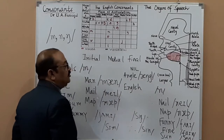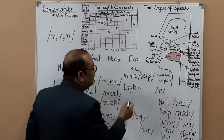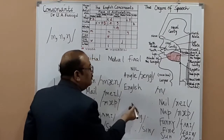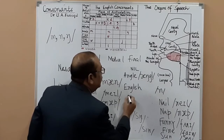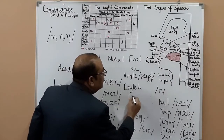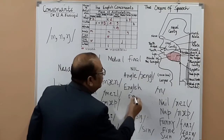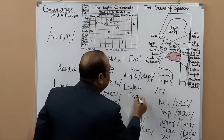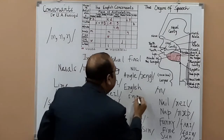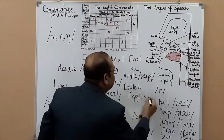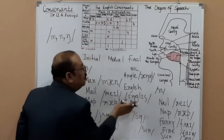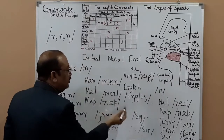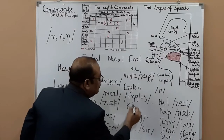And then 'English' — we transcribe it this way. 'English' is a word often given for transcription since you study transcription there in English. How do you write it? E, and then you write — English. Here you have the medial occurrence and there is a clear /ŋ/ sound followed by /g/.